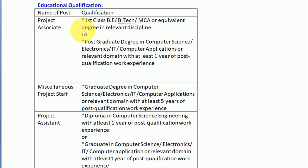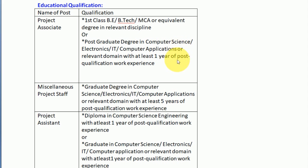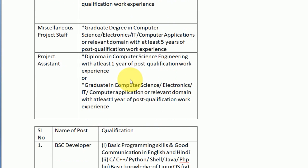Candidates should have 5 years of experience for the senior post. For the first level post, 1 year of post-qualification experience is required. For the Project Assistant, a Diploma in Computer Science Engineering with 1 year of experience is needed.